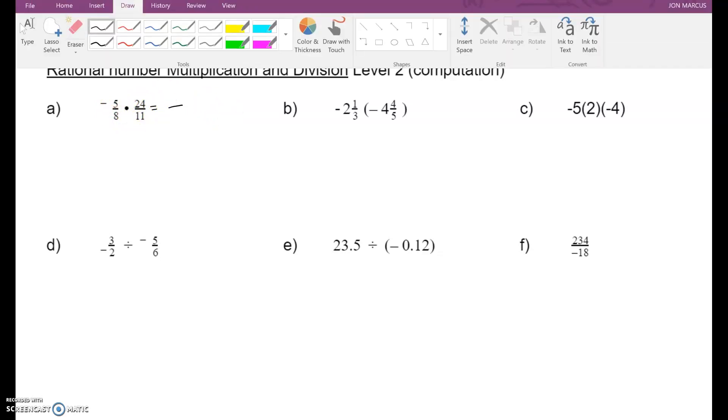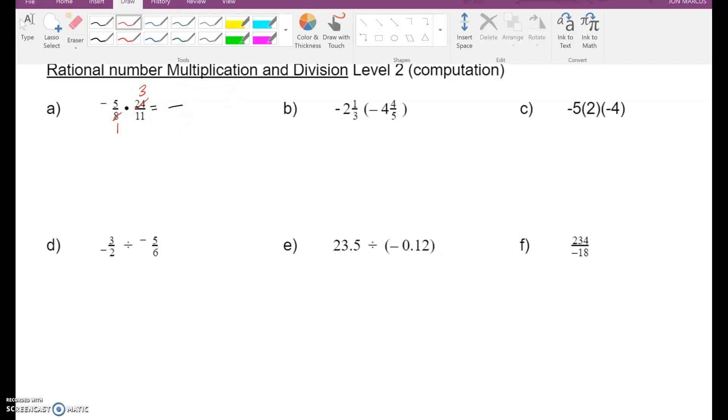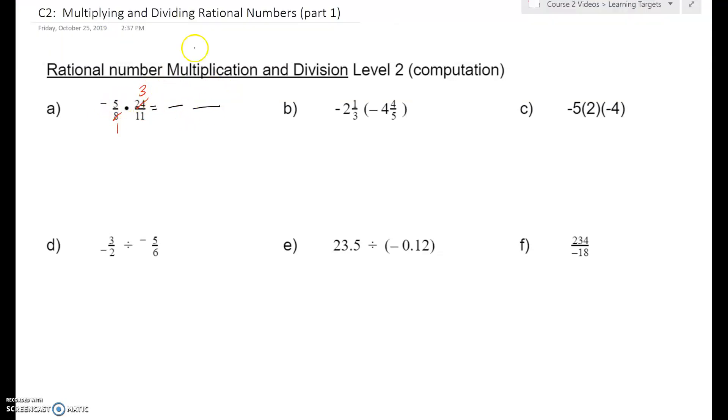I could do 5 times 24 and get that result, and 8 times 11. However, I'm noticing that there is a common factor here. 8 and 24. I know that a factor of 8 is here, and a factor of 8 is there. So 8 divided by 8 is 1, 24 divided by 8 is 3. Now I can multiply across and get 5 times 3 is 15, 1 times 11 is 11. So negative 15 elevenths, or if we want to make it a mixed number, negative 1 and 4 elevenths. Either one of those is an acceptable answer.